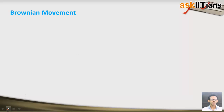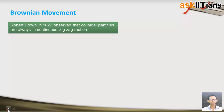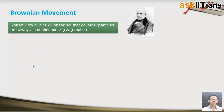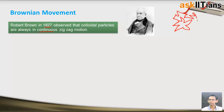The next property is Brownian movement. This was first observed by scientist Robert Brown in 1827 — that colloidal particles are always under continuous zigzag movement. Whenever colloidal particles are observed under an ultra-microscope, they are always moving in random directions with no fixed direction, and this continuous directionless movement is known as zigzag motion.